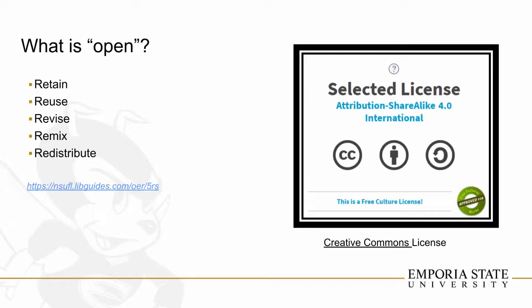Open means, at the very least, that you have the right to retain a copy of a work and to reuse it as it is without a cost. Copies of content can be retained for personal archives or reference — it's not going to go away. That's not always the case with ebooks you check out from a library, which often have a loan period and files may become inaccessible depending on the agreement with the vendor. Reuse means you can use the content in its unaltered original format — in a class, a study group, on a website, or in a video, as long as it isn't changed.